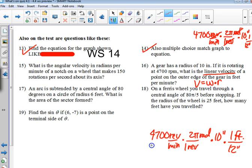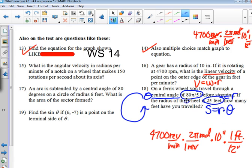18 is an arc length question. How far have you traveled around the outside? So it's S equals R times theta. Is this already in radians? So there's theta. And R is 25 feet. So you just do 25 times 80 pi over 5.